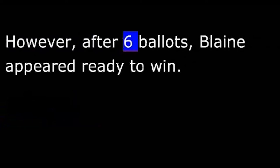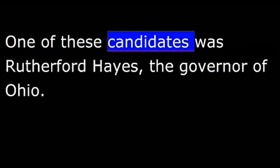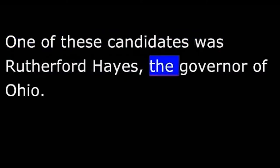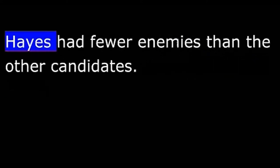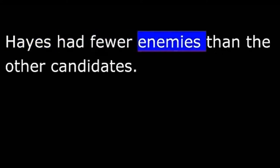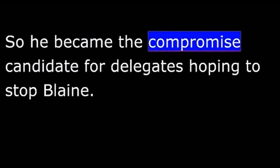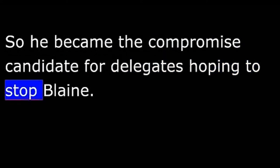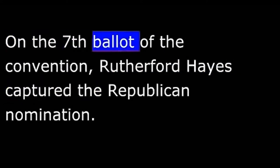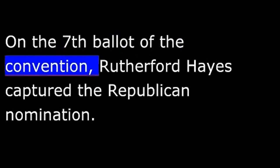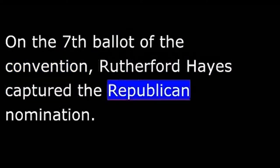However, after six ballots, Blaine appeared ready to win. To stop him, his opponents needed to unite behind another candidate. One of these candidates was Rutherford Hayes, the governor of Ohio. Hayes had fewer enemies than the other candidates, so he became the compromise candidate for delegates hoping to stop Blaine. On the seventh ballot of the convention, Rutherford Hayes captured the Republican nomination.